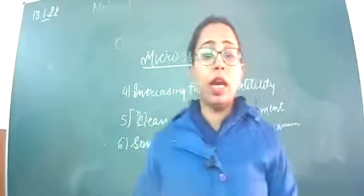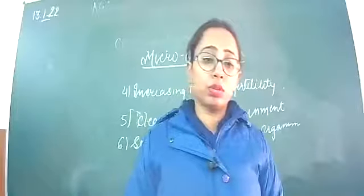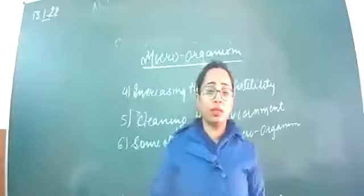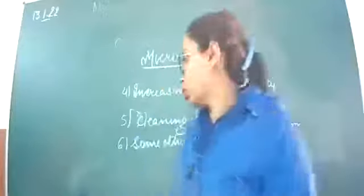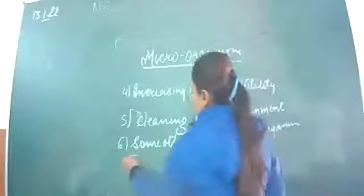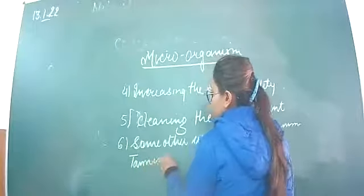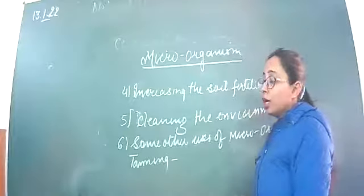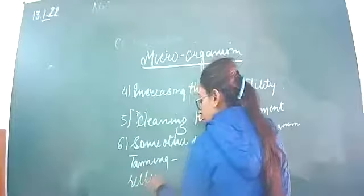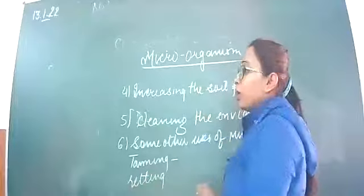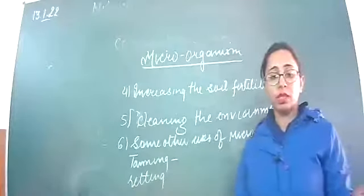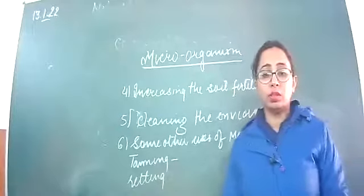In the jute industry also, bacteria help in the separation of fibers, and this process is called retting. So two terms to note: tanning, in which animal skin is hardened into leather, and retting, in which fibers of jute are separated out. This is called retting of fibers.